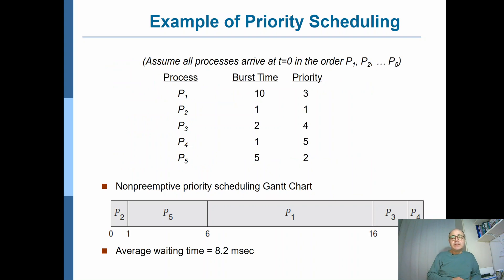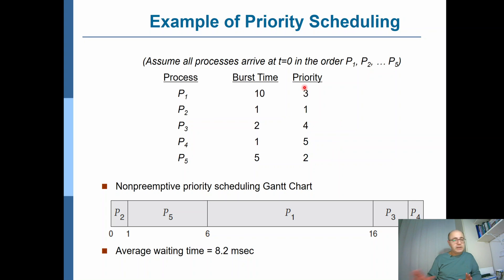Let's look at an example for priority scheduling. We have five processes that all arrive at t equals zero. The second column gives their burst times and the last column gives their priorities. Note that burst times are not directly related to priorities here — we are not talking about Shortest Job First.